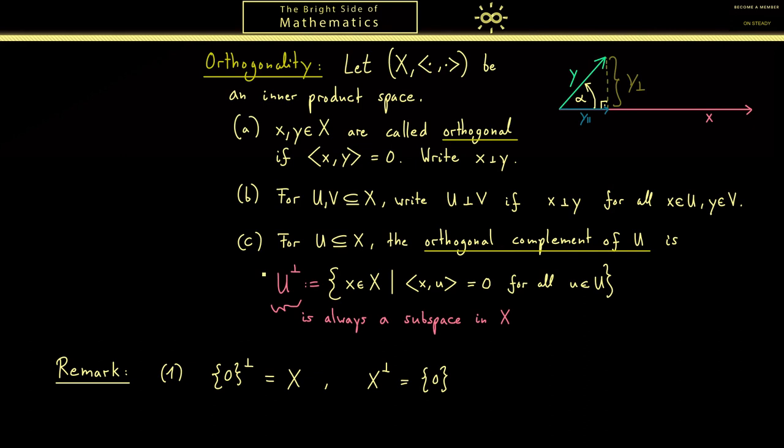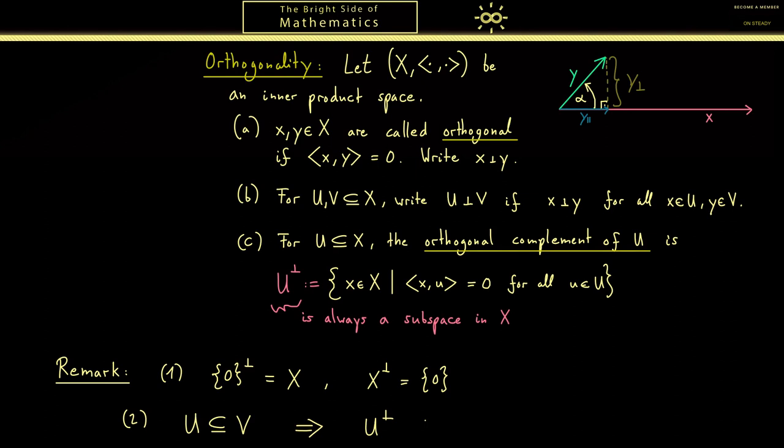A little bit more we have to do if we look at subsets. In the case that U is a subset of V we can look at the orthogonal complements and find that the subset relation is now the other way around. Here I think it's helpful that we write down a proof.